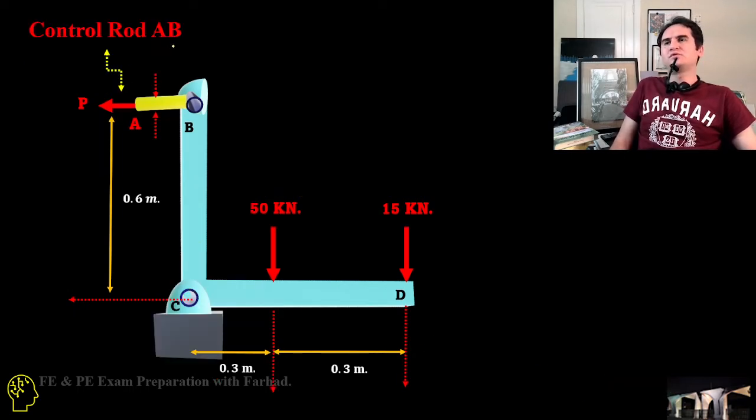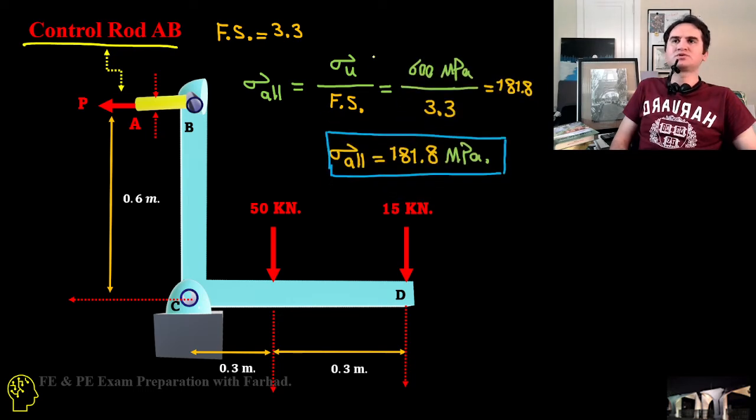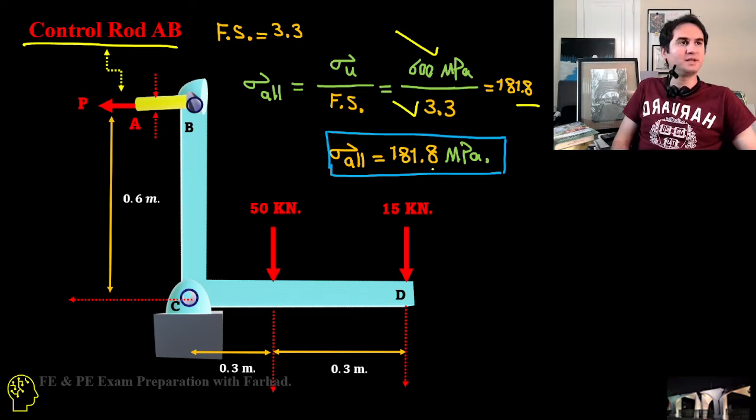For control rod AB, which is the very first part, the factor of safety is 3.3 provided. Sigma acceptable or allowable normal stress is ultimate normal stress over factor of safety. Ultimate is provided in the problem statement, factor of safety is provided in the problem statement. This gives us sigma allowable is 181.8 megapascals.